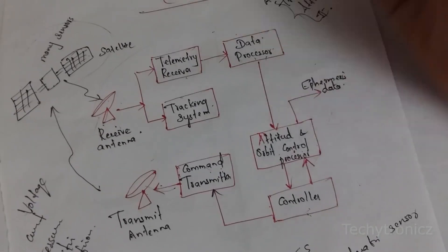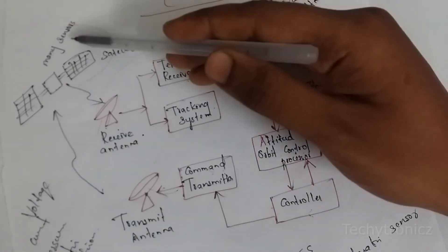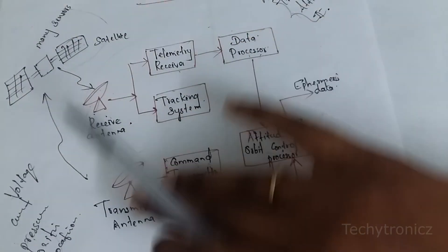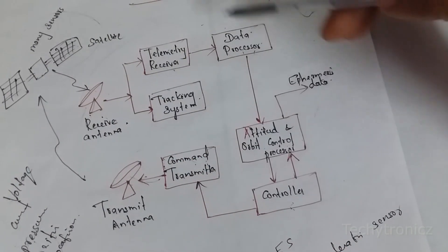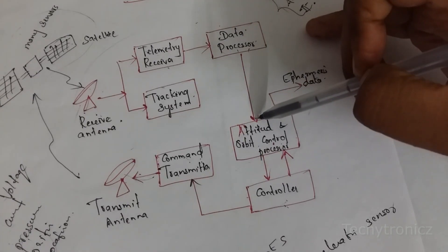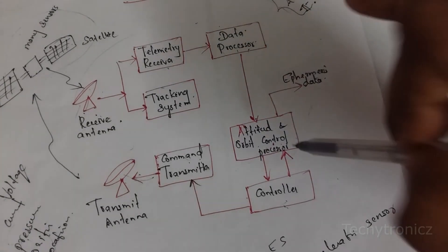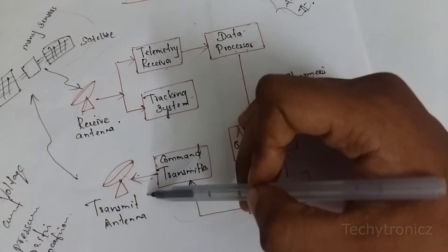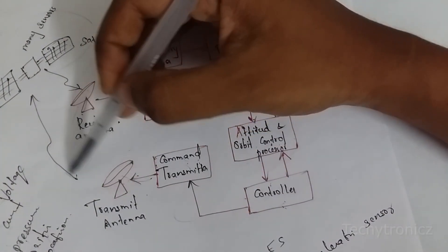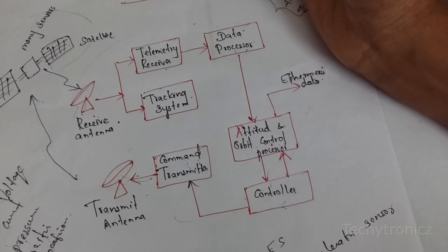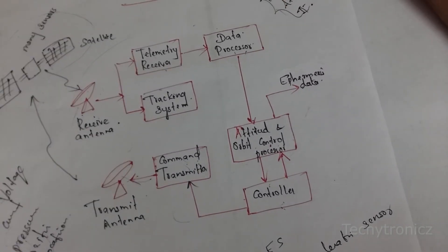That is all about telemetry, tracking and commands. The satellite uses many sensors to collect all information and transmits it to the earth station antenna. The earth station antenna receives and processes the information and gives it to the attitude and orbit control. If the earth station wants to pass information, it sends it to the controller and then to the transmit antenna, which uses the wireless channel to control the satellite. Hope you all understand this topic — thank you, students.